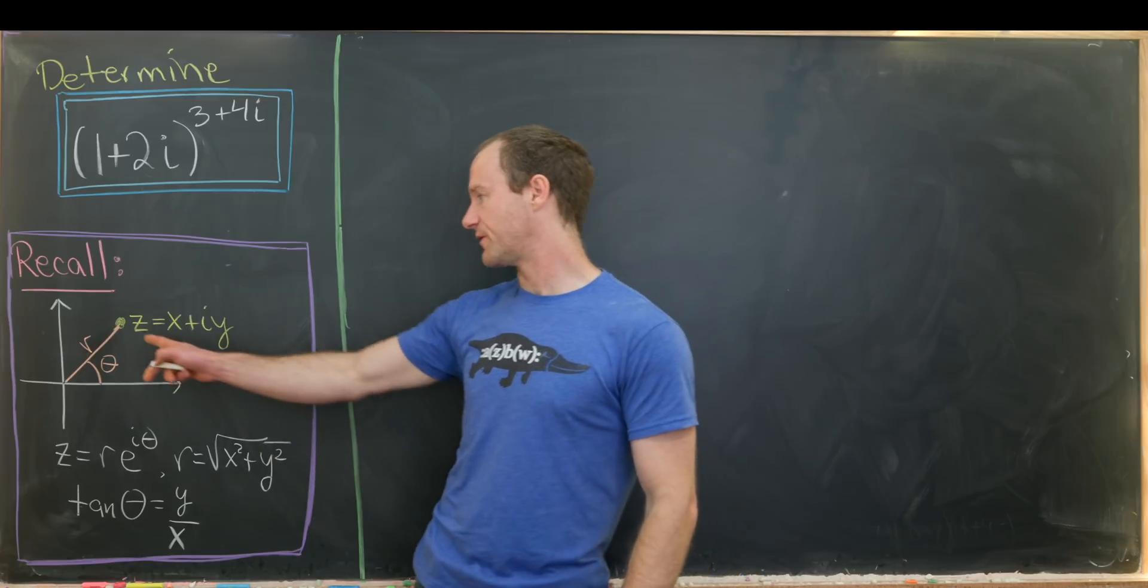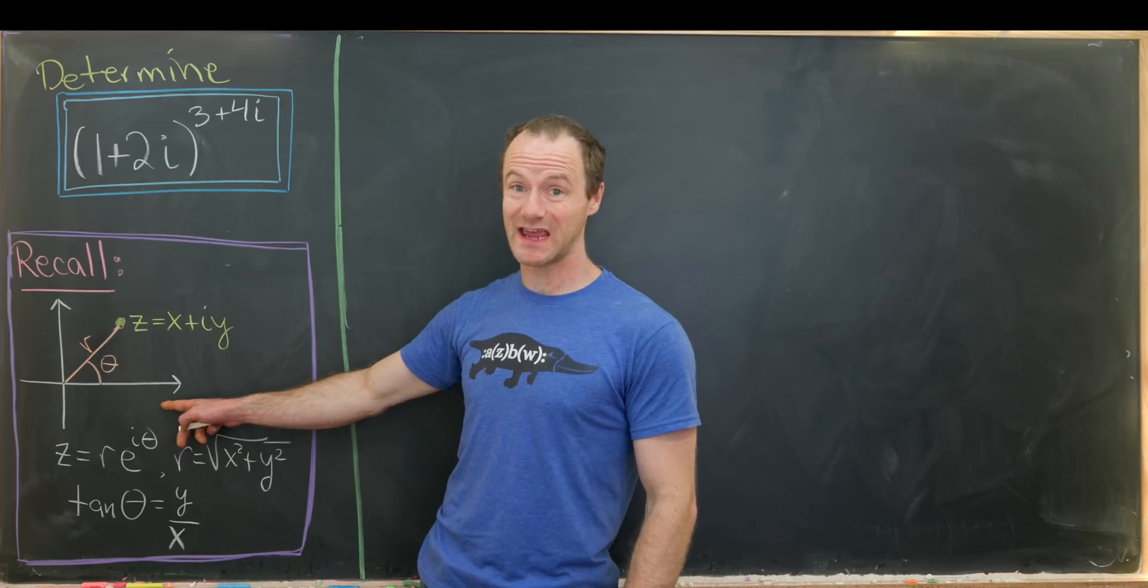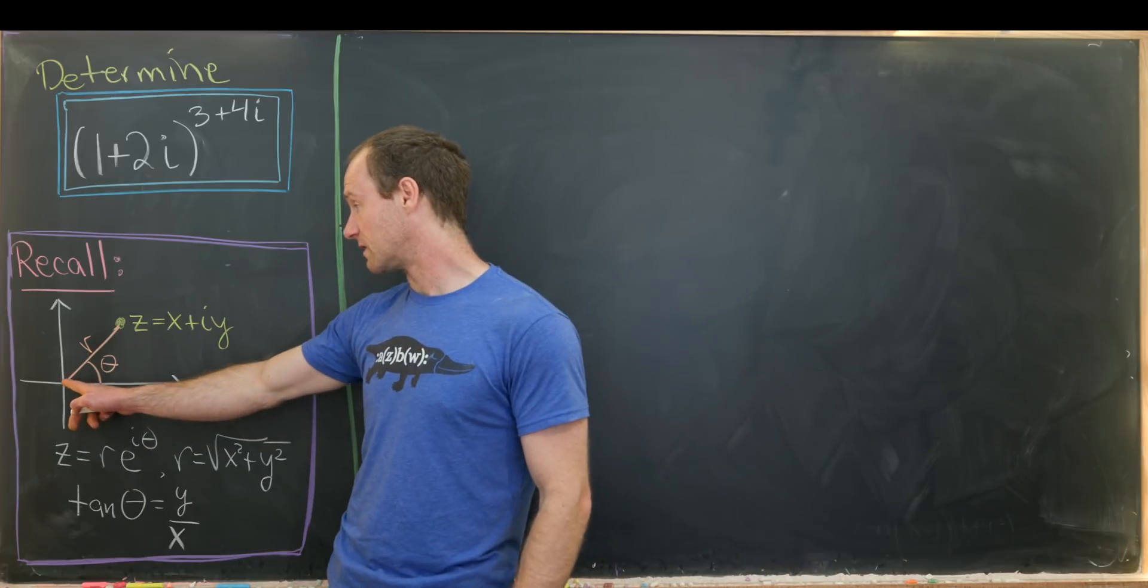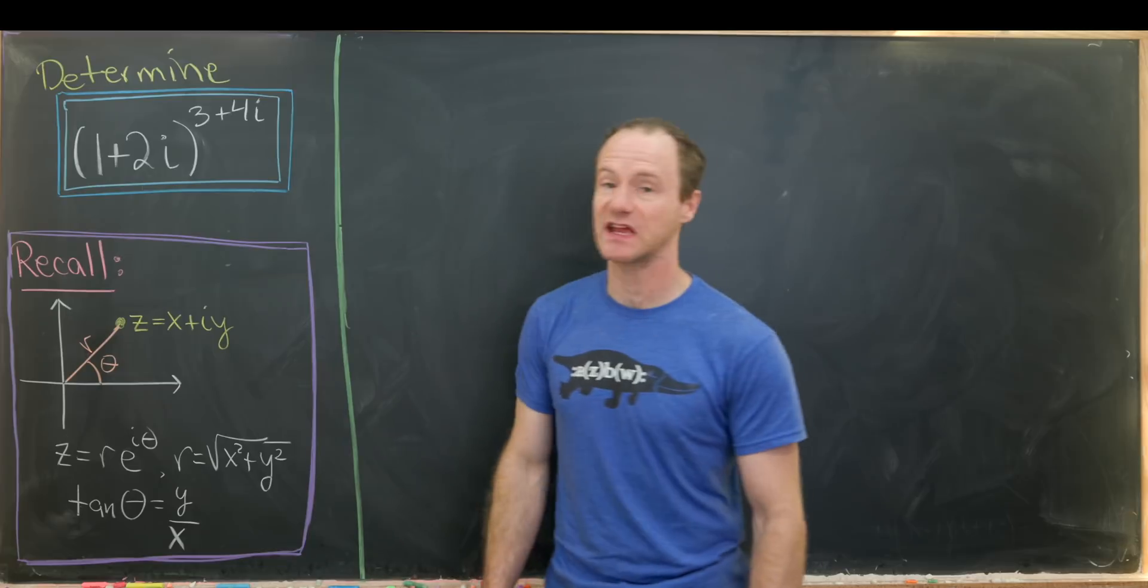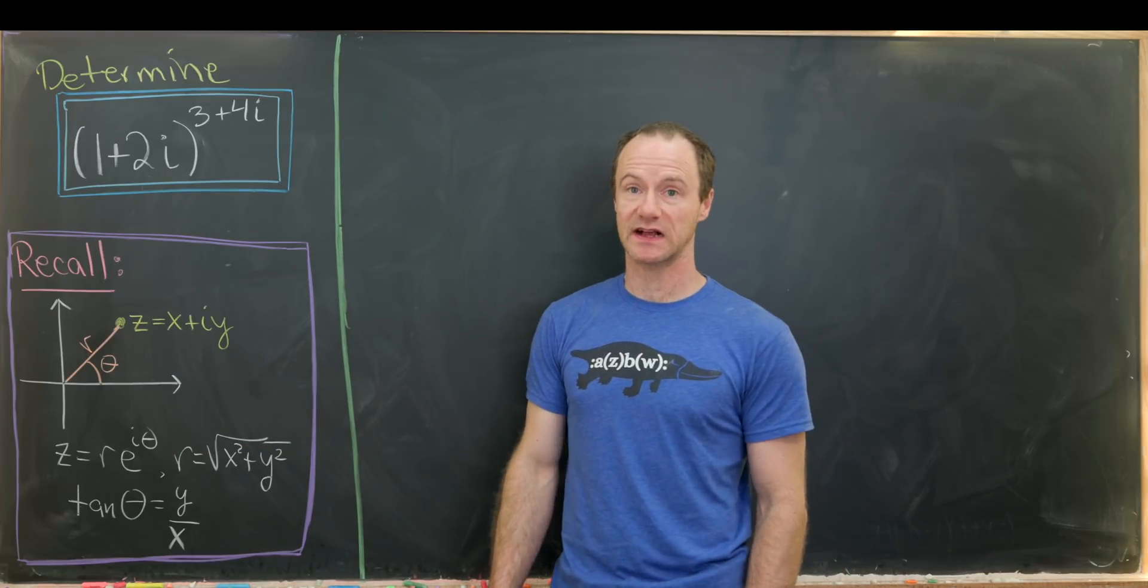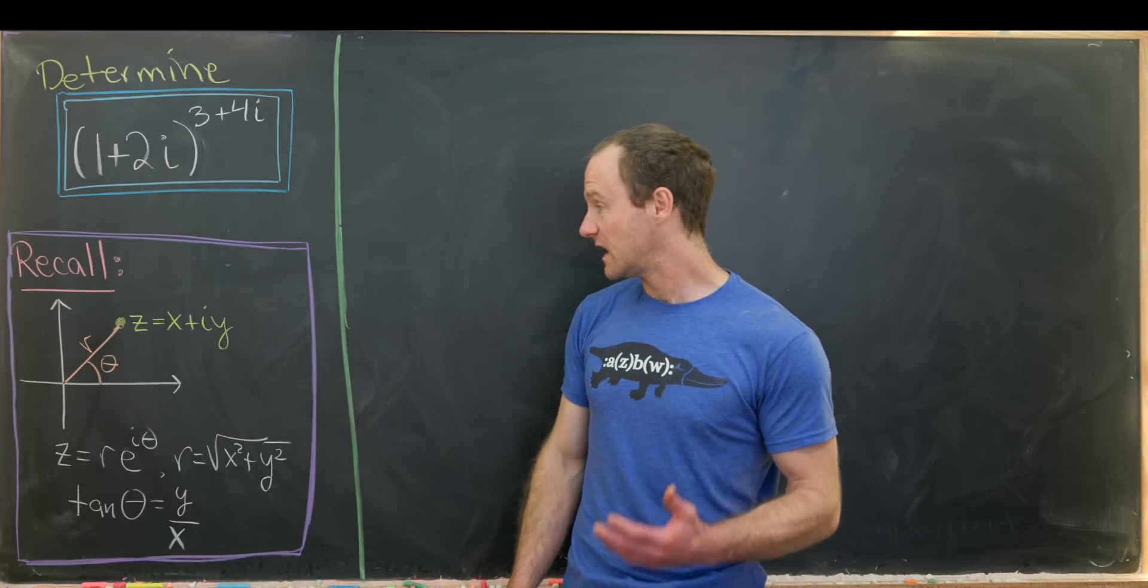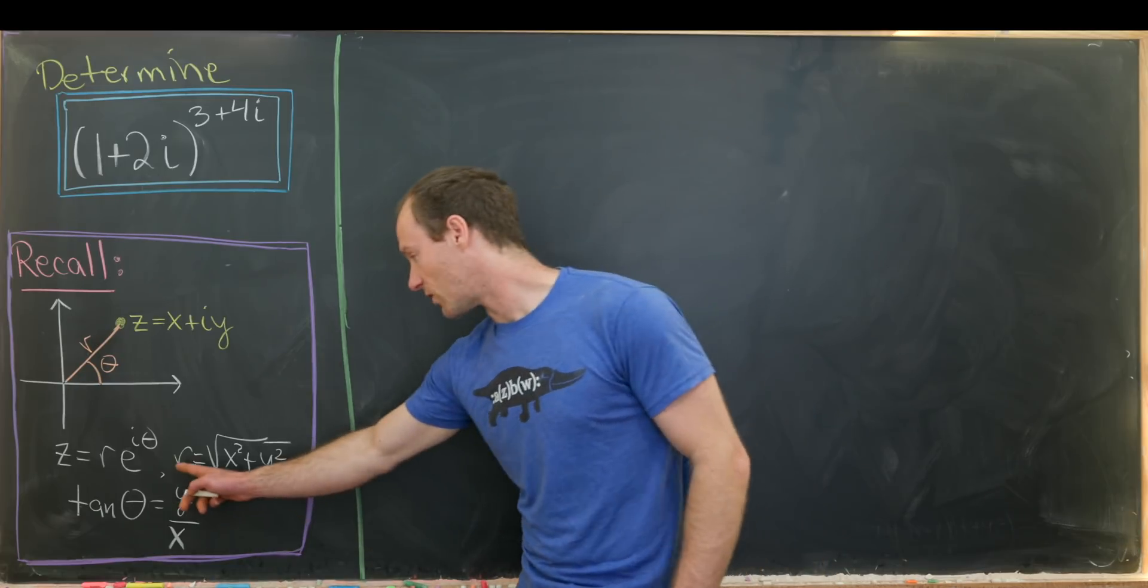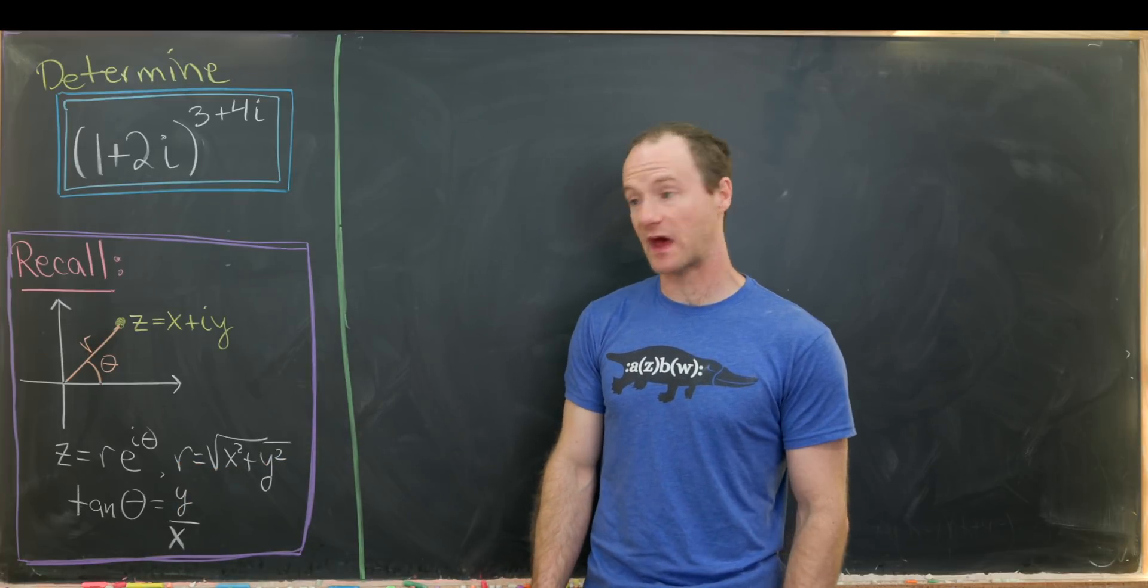So let's recall if we've got a number z in the complex plane, which can be written rectangularly as x plus iy, where if we build a line segment from the origin to this point z, that line segment forms an angle theta with the positive real axis, and that line segment has length r. Then all of these parts are related by the following formulas. So we have r is equal to the square root of x squared plus y squared. That follows pretty quickly from the Pythagorean theorem.